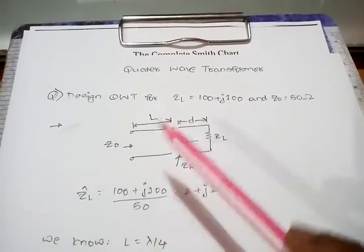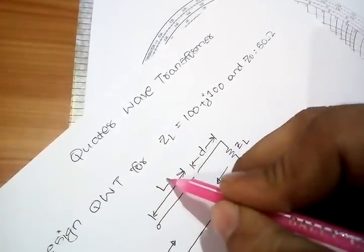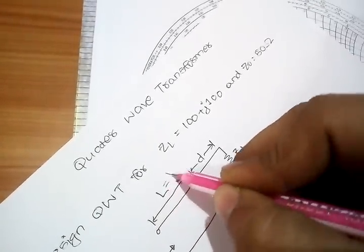This is a small diagram I have drawn. This is lambda by 4 because I have named it as L. I will just put it as lambda by 4.